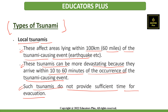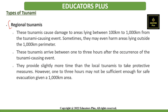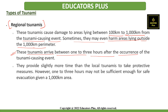The next type is regional tsunamis. These can cause damage to areas lying between 100 km to 1000 km from the tsunami-causing event, and sometimes may even harm areas outside the 1000 km perimeter. These tsunamis arrive between 1 to 3 hours after the occurrence of the event, whether volcanic eruption, earthquake, or other causes. They provide slightly more time than local tsunamis for protective measures, however 1 to 3 hours may not be sufficient for safe evacuation given the 1000 km area.